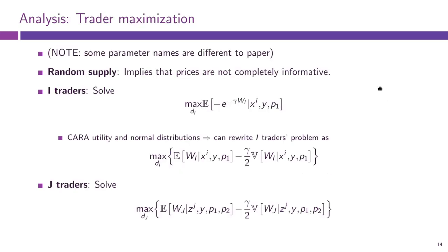The existence of this random supply — the randomness of aggregate supply — implies that prices will not be perfectly informative. Traders J in the second period get to observe the price from the previous period, but this will not allow them to perfectly single out what theta_I was — what information agents had in period one — because P1 might be high due to high theta_I or due to low aggregate supply.